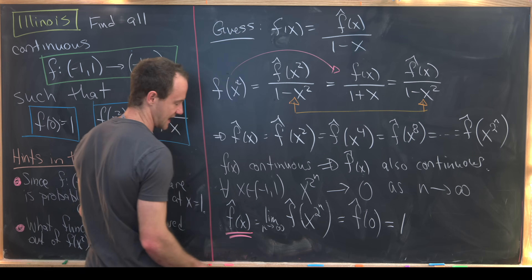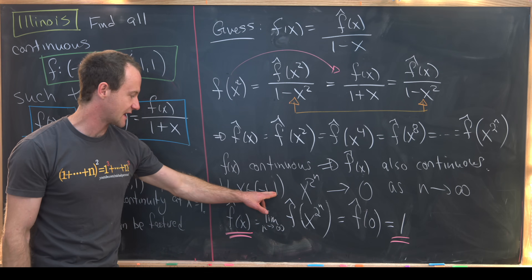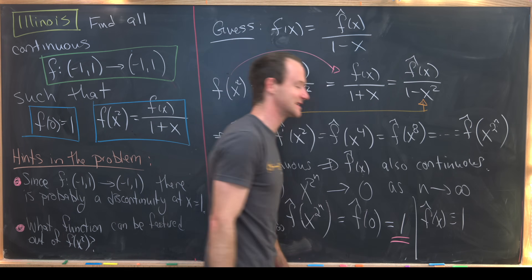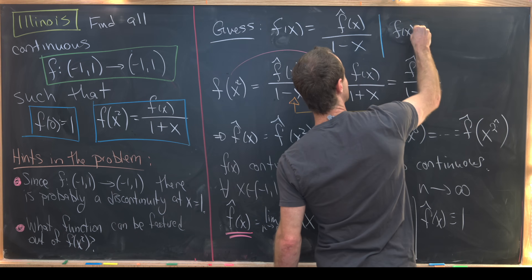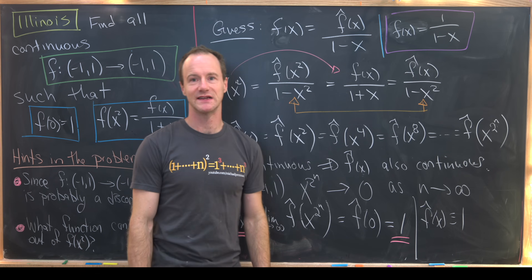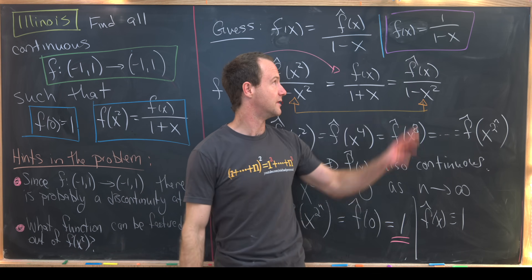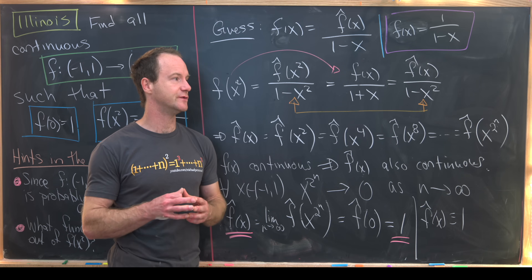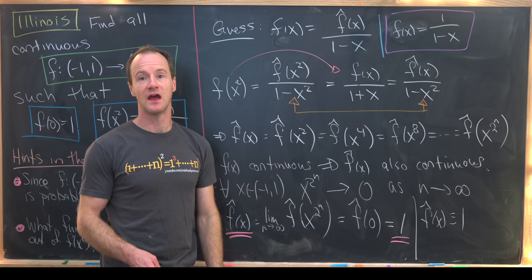Looking at the far left and right sides of this chain of equalities, we see that for all x in (-1, 1), f̂(x) = 1. So f̂(x) is identically the constant function 1. That means our only solution is f(x) = 1 / (1 - x). To finish, you check that this function is continuous on the interval, that f(0) = 1, and that it satisfies the functional equation. After doing that, we know there is exactly one solution, and it is this function.